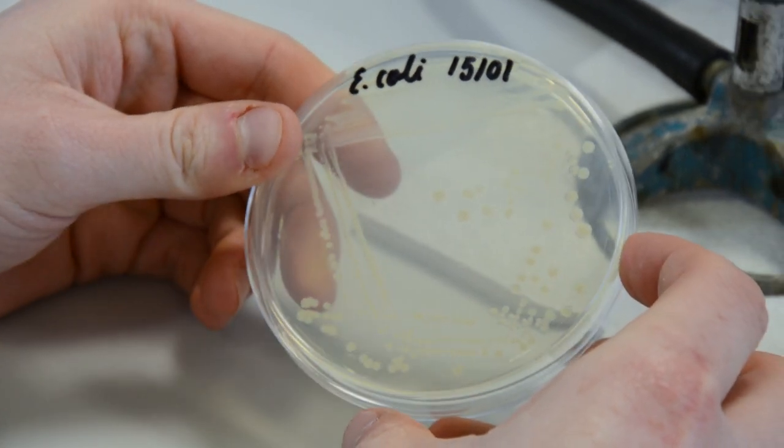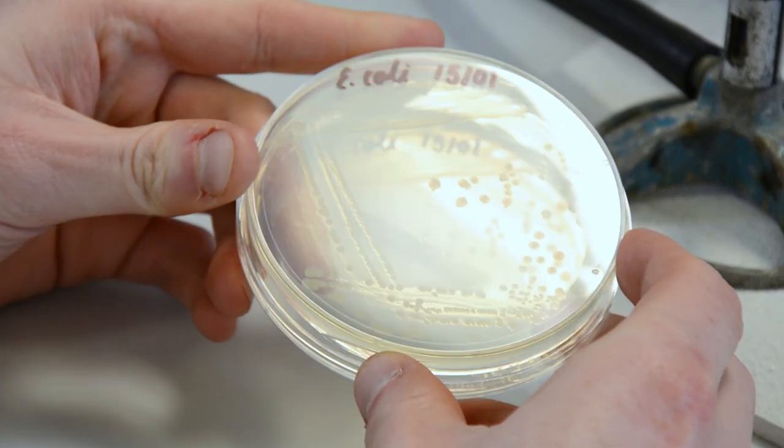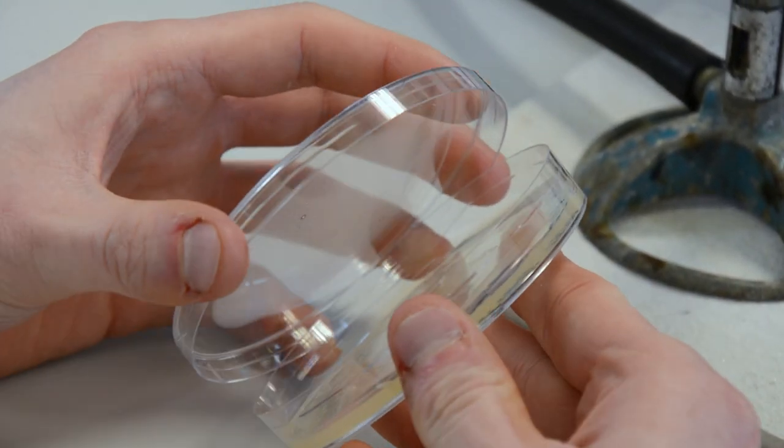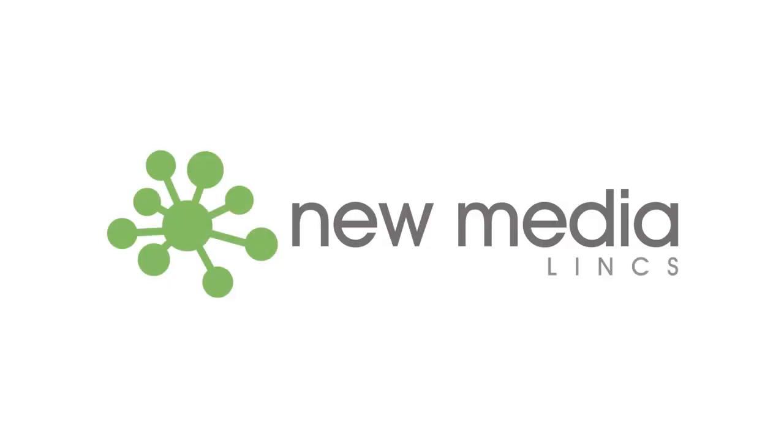In a pure culture, all colonies will look alike in shape, color and texture. If any colonies have a different appearance, that probably suggests there are contaminating organisms present.